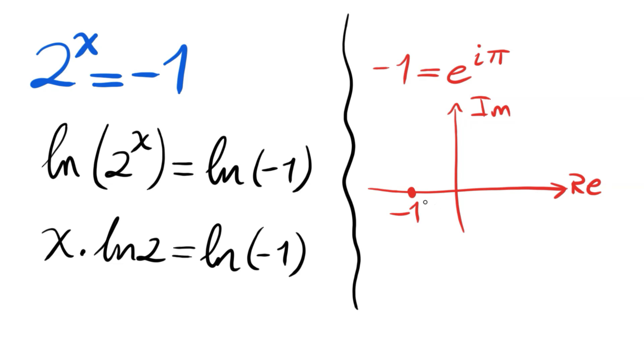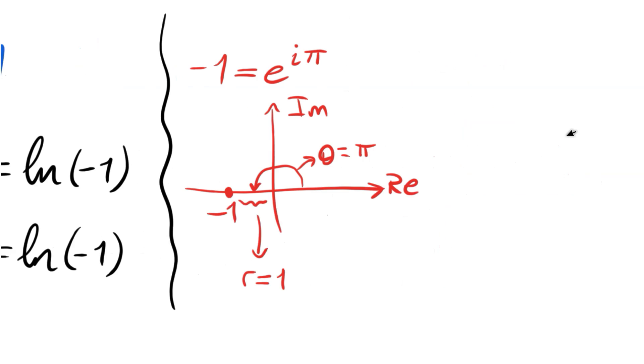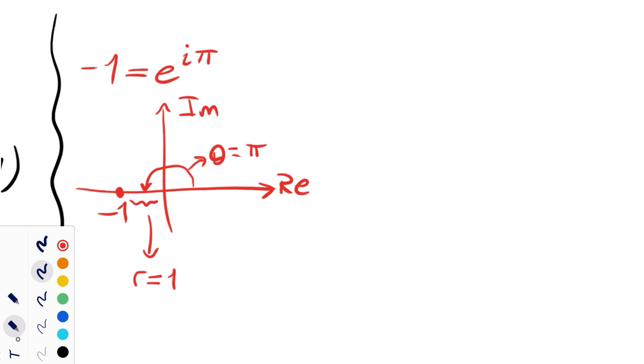...the length here r is 1 and the angle, the principal angle here is π, theta is π. So let's write again: we have z is r times e^(iθ), so our z is negative 1 here.